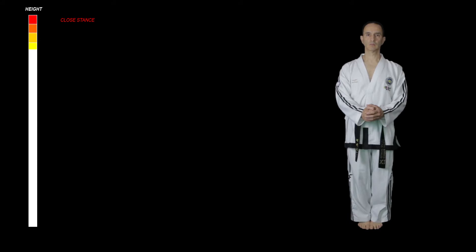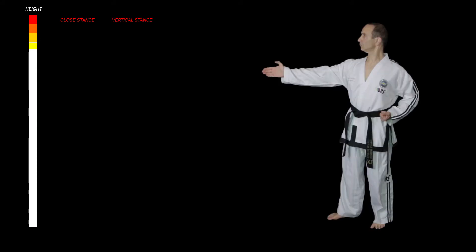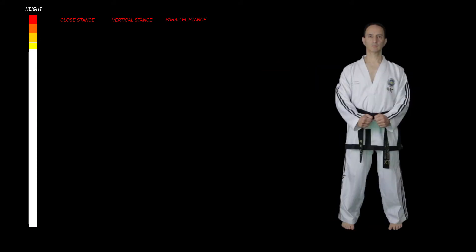The reason why the stances affect the shape of the sine wave motion is because your body will be at a different height depending on which stances you adopt. In stances such as closed stance, vertical stance, and parallel stance, the body remains tall because the stance is narrow and the legs are kept straight.